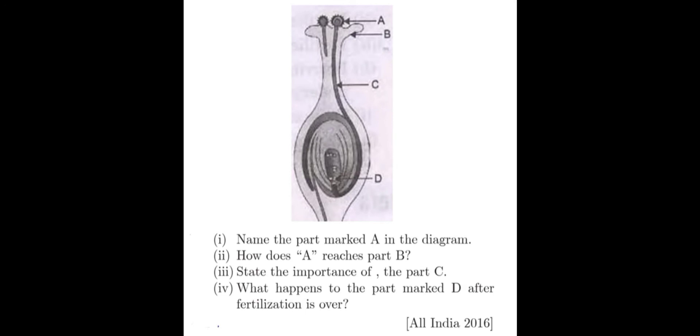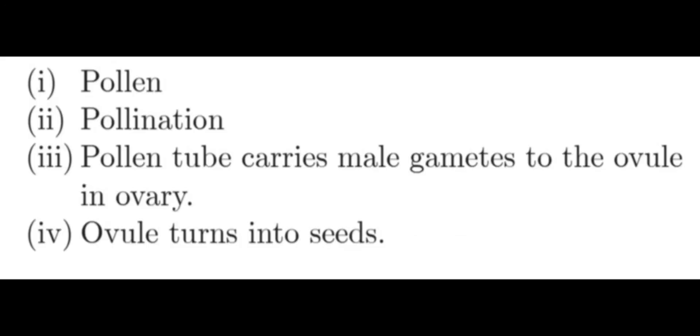Let's see the answers once again. Answer for question number 1 is pollen grain. Question number 2, pollination. Question number 3, pollen tube carries male gametes to the ovule in the ovary. Question number 4, ovule turns into seeds.